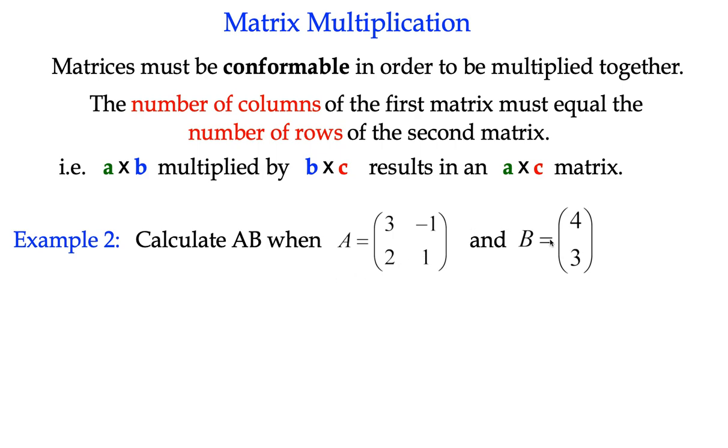So if we want to calculate two matrices, and I'll explain it in this example two, calculate the product AB, matrix A multiplied by matrix B. Well, A here you can see is a two by two, it's a square matrix. So we can just write up here two by two matrix. And matrix B is a two by one matrix.